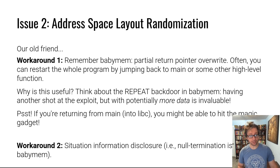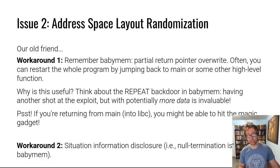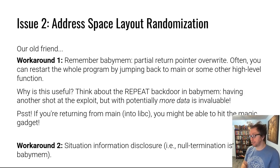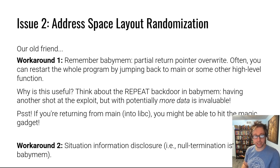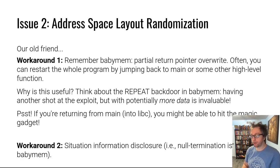Issue two: Address Space Layout Randomization (ASLR). This also relates to issue one — if you can only do one gadget — because if you don't know where anything is in memory, you can't write intelligent return addresses; it just won't work. But you've already seen this problem in baby mem, and you solved it with a partial return pointer overwrite.